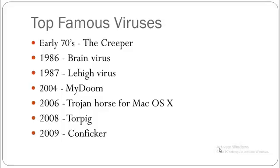In 1986 we had the Brain virus, created by Amjad and Basith Farooq Alvi from Lahore, Pakistan. It spread via floppy disks and infected boot records, not computer hard drives. There were variants such as Lahore, Pakistani Brain, Brain A, and UIUC virus. These viruses took over free space on the floppy disk, hid from detection, and disguised themselves by displaying uninfected boot sector data on the disk.